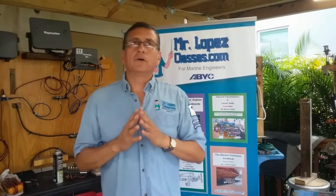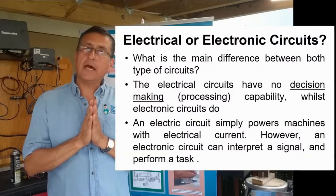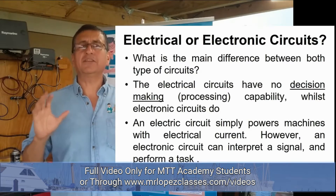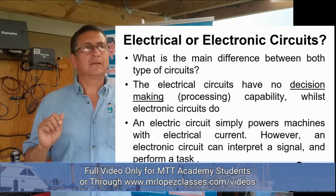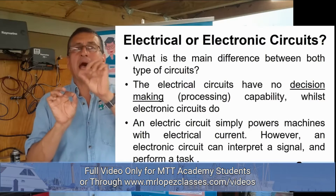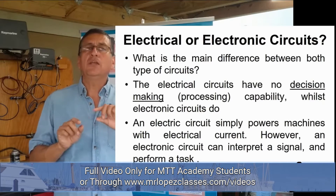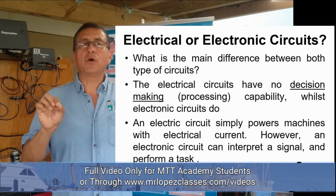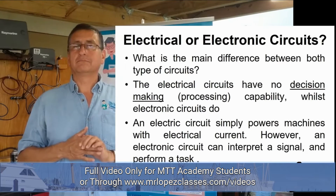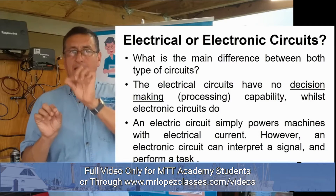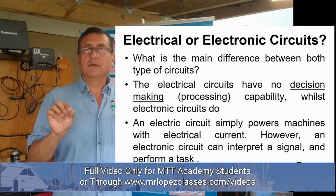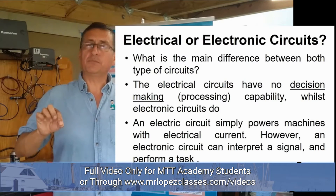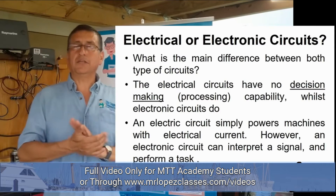What is the meaning of an electrical circuit and an electronic circuit? The electrical circuit is a path only to flow electrons from one point to the other point. It is a path, an electrical part, with wires in order to move electrons from this point to this point. This is an electrical circuit.